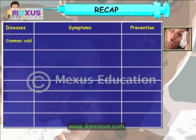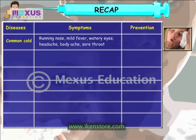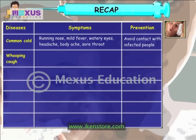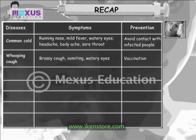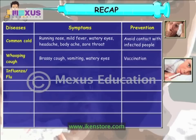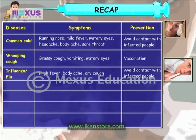To recap: the symptoms of common cold are a running nose, mild fever, watery eyes, headache, body ache and sore throat — prevented by avoiding contact with infected people. The symptoms for whooping cough are brassy cough, vomiting and watery eyes — prevented through vaccination. The symptoms of influenza are high fever, body ache and dry cough — prevented by avoiding contact with infected individuals.